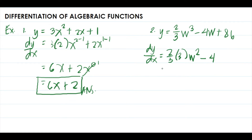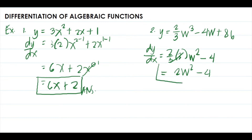The derivative of the constant 86 equals zero, so plus zero. Simplifying, the threes cancel out, giving us two-thirds times 3 equals 2. So the derivative of two-thirds w cubed minus 4w plus 86 is equal to 2w squared minus 4.